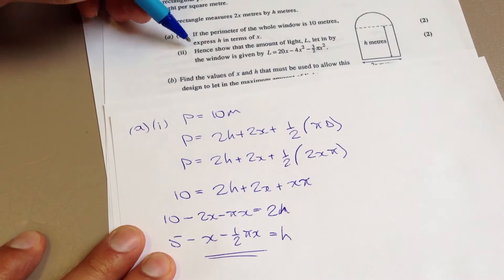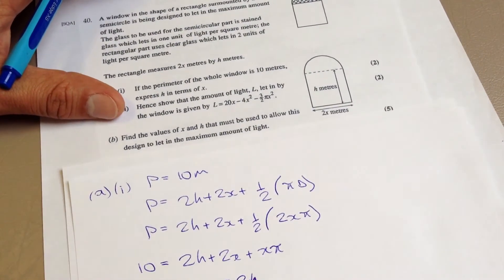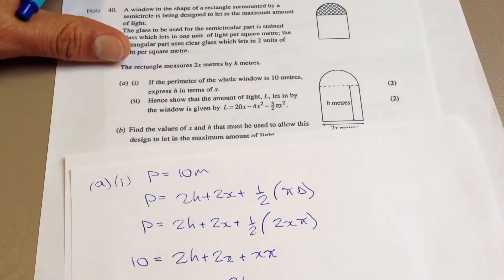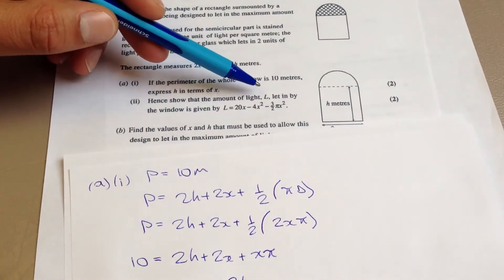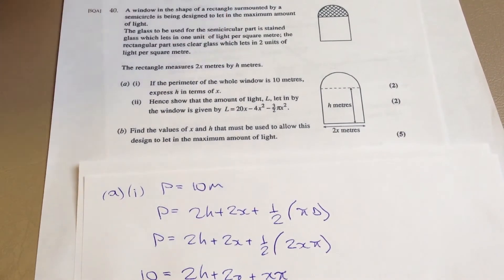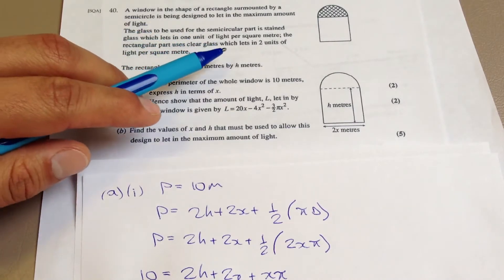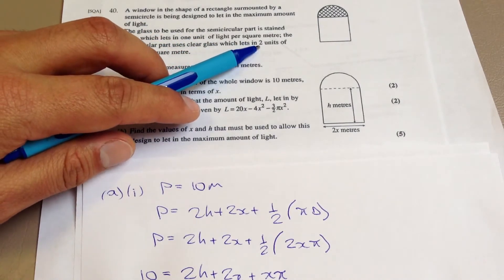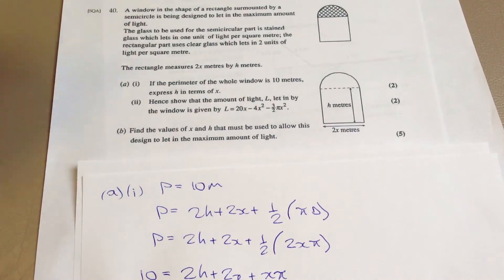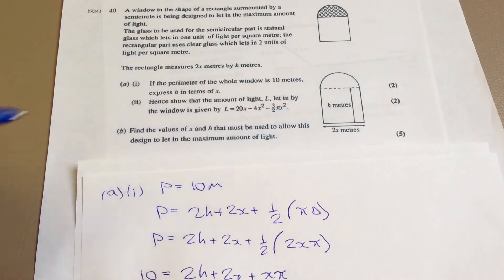So next part, and that was two marks. Next part, let me bring these closer so it's easier for you to see. Hence, show that the amount of light L letting by the window is given by this. Now, the amount of light will be dependent on the area, which we can work out, and by the amount of light L letting for each square metre effectively, which is two units for this part and one unit for this semicircular part. So, let's have a look at that.